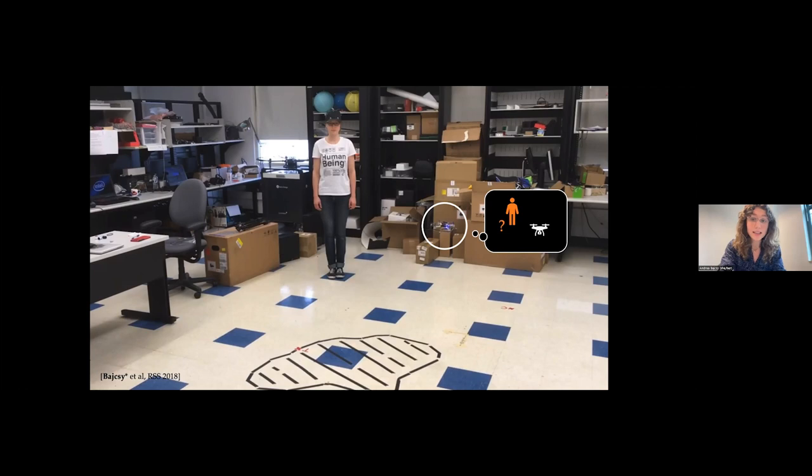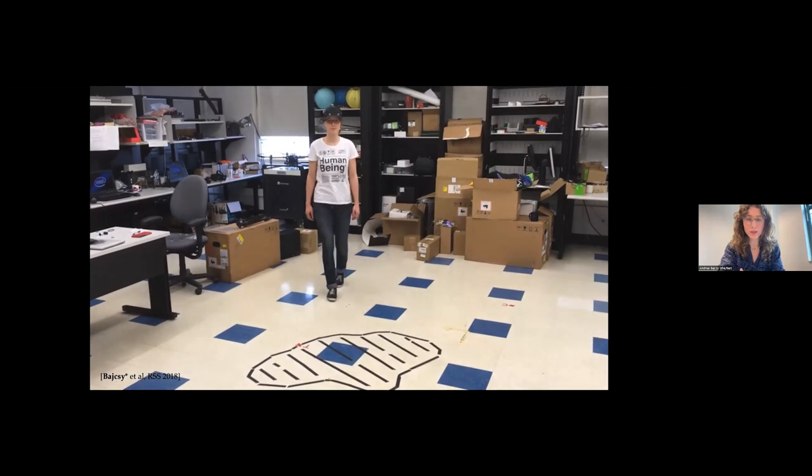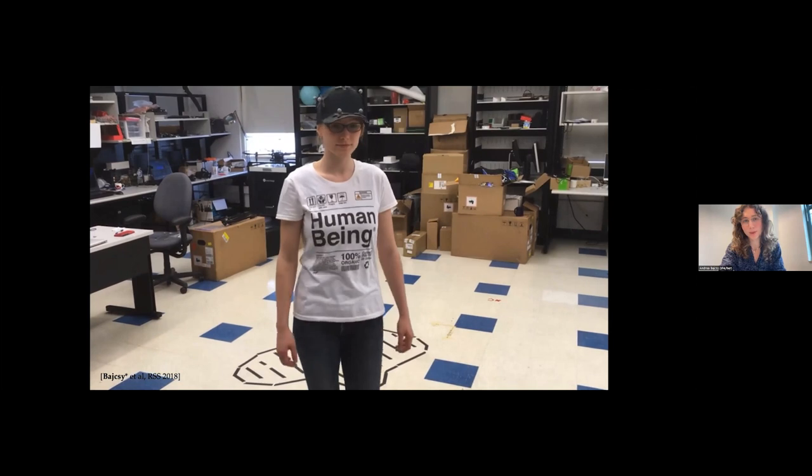In scenarios like these, the robot can use a learned human model to predict where she could possibly move by observing her behavior. Seeing the human take a step forward allows the robot to infer that she's going straight to the door, after which the robot plans a path to avoid her and make its way across the room.